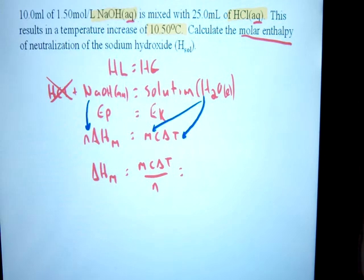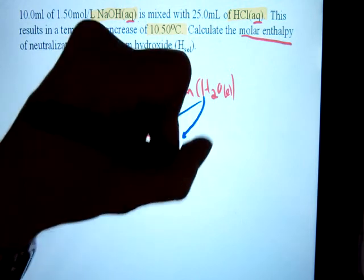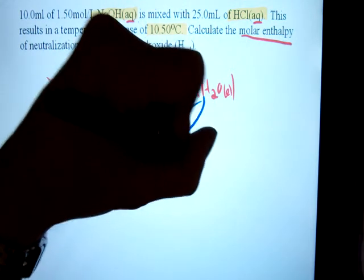Well since we are dealing with the entire solution, not just one part or another, we're going to use the total volume. So that's 35 mils, which is going to be directly converted into 35 grams.